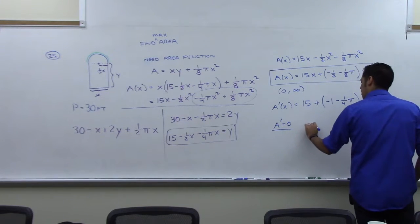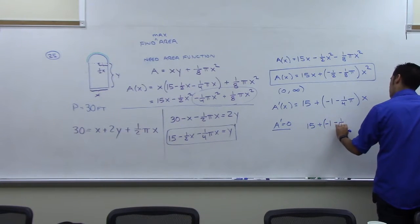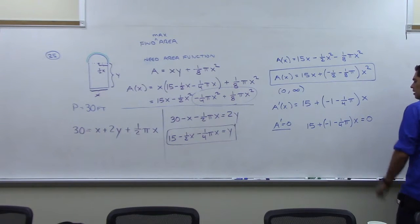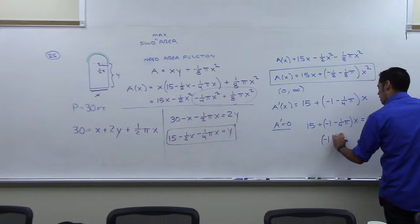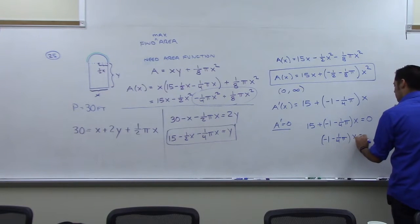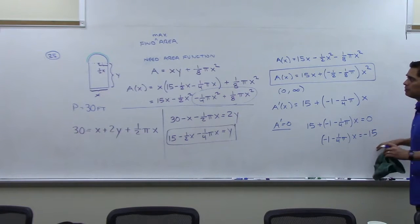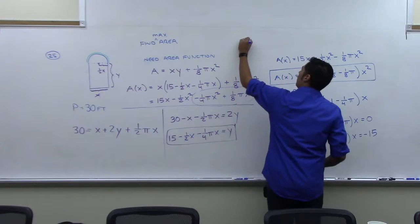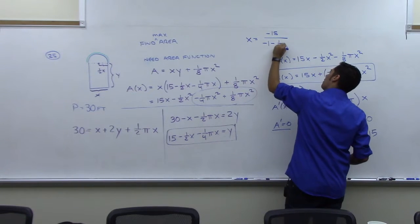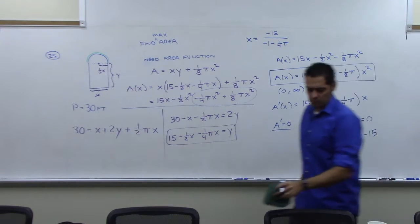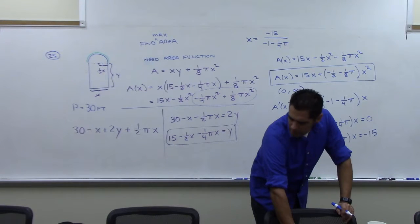So when I set that equal to zero, I get 15 plus negative 1 minus 1 fourth pi, x equals zero. Let's move the 15 over to the other side. Or you know what? Yeah, I'll do that. You've got negative 1 minus 1 fourth pi, x equals negative 15. And then to solve for x, I divide through by all that. So I have x is negative 15 over negative 1 minus 1 fourth pi. I think it's time to get that as a decimal.